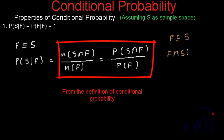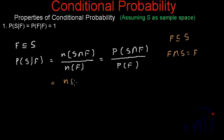F intersection S equals F. That is why the number of elements of S intersection F equals the number of elements of F divided by the number of elements of set F. Or this equals the probability of F divided by the probability of F.